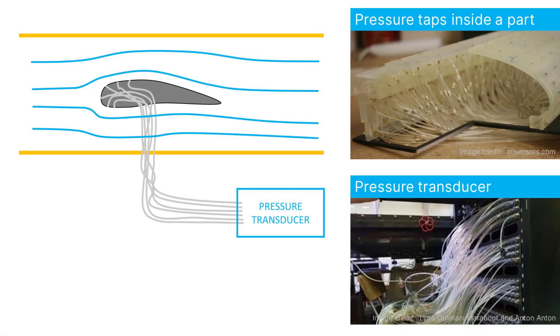To measure the static pressure on the surface of an object, one can use pressure taps. These are small holes drilled perpendicularly to the surface with a tube fitted to each hole inside the model. These tubes are then sent to a pressure transducer, typically located outside of the wind tunnel, where the pressures are measured and logged.